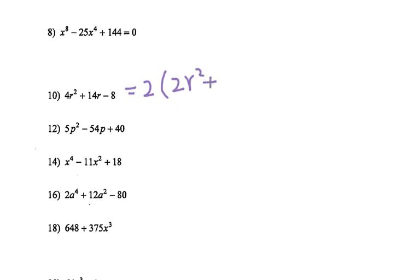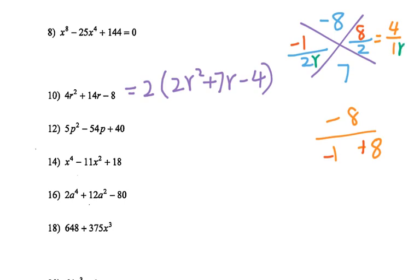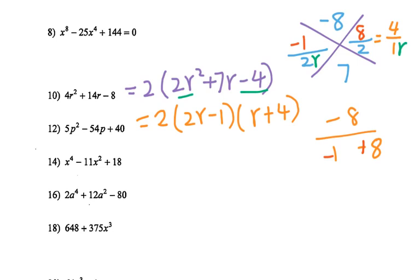Now let's go to number 10. Do common factor first — I have 2. Then I got 2r squared plus 7r minus 4. Do ninja X: a times c is negative 8, b is 7, over 2, over 2. For negative 8: try 1 and negative 8 — adding gives negative 7 — so change signs to negative 1 and positive 8. Reduce: you get 4 over 1. Variable is r. Check: 2r times 1r gives 2r squared, negative 1 times 4 is negative 4 — correct. Bottom-up: (2r − 1)(r + 4). That's for number 10.